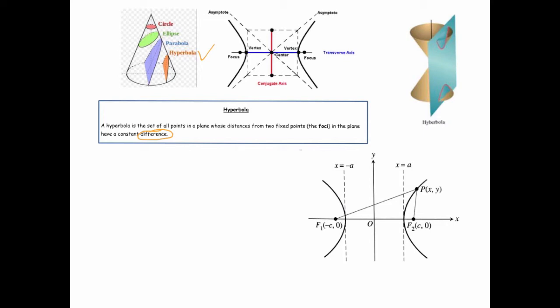A hyperbola is called a conic section because if you slice a cone parallel to its axis of rotation, you get a hyperbola. Key terms: the two foci lie on the transverse axis, which connects vertex to vertex. The axis going the other way, which does not intersect the curve, is called the conjugate axis. A rectangle is formed whose diagonals give the asymptotes, and the dimensions of that rectangle come from the equation.